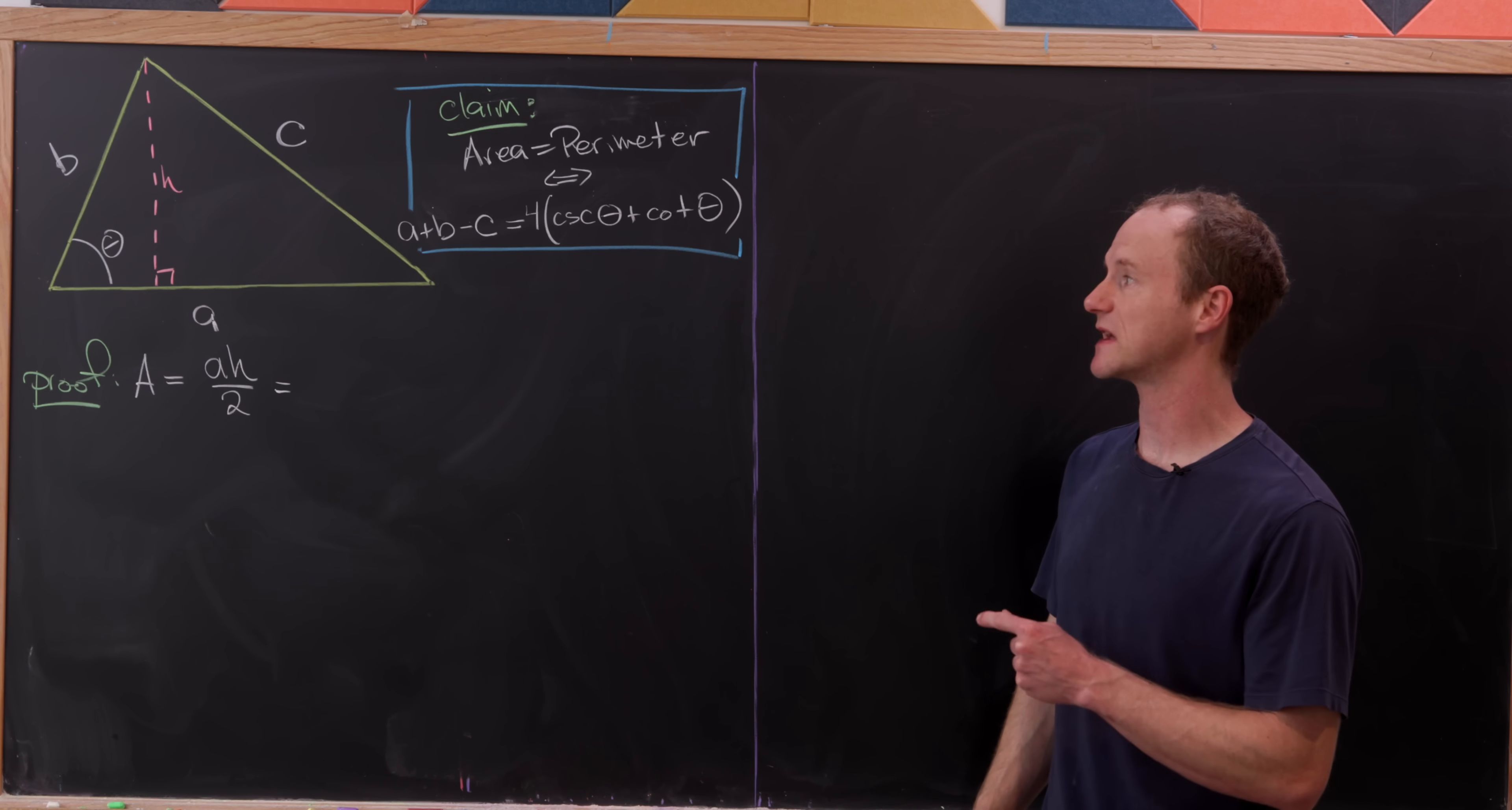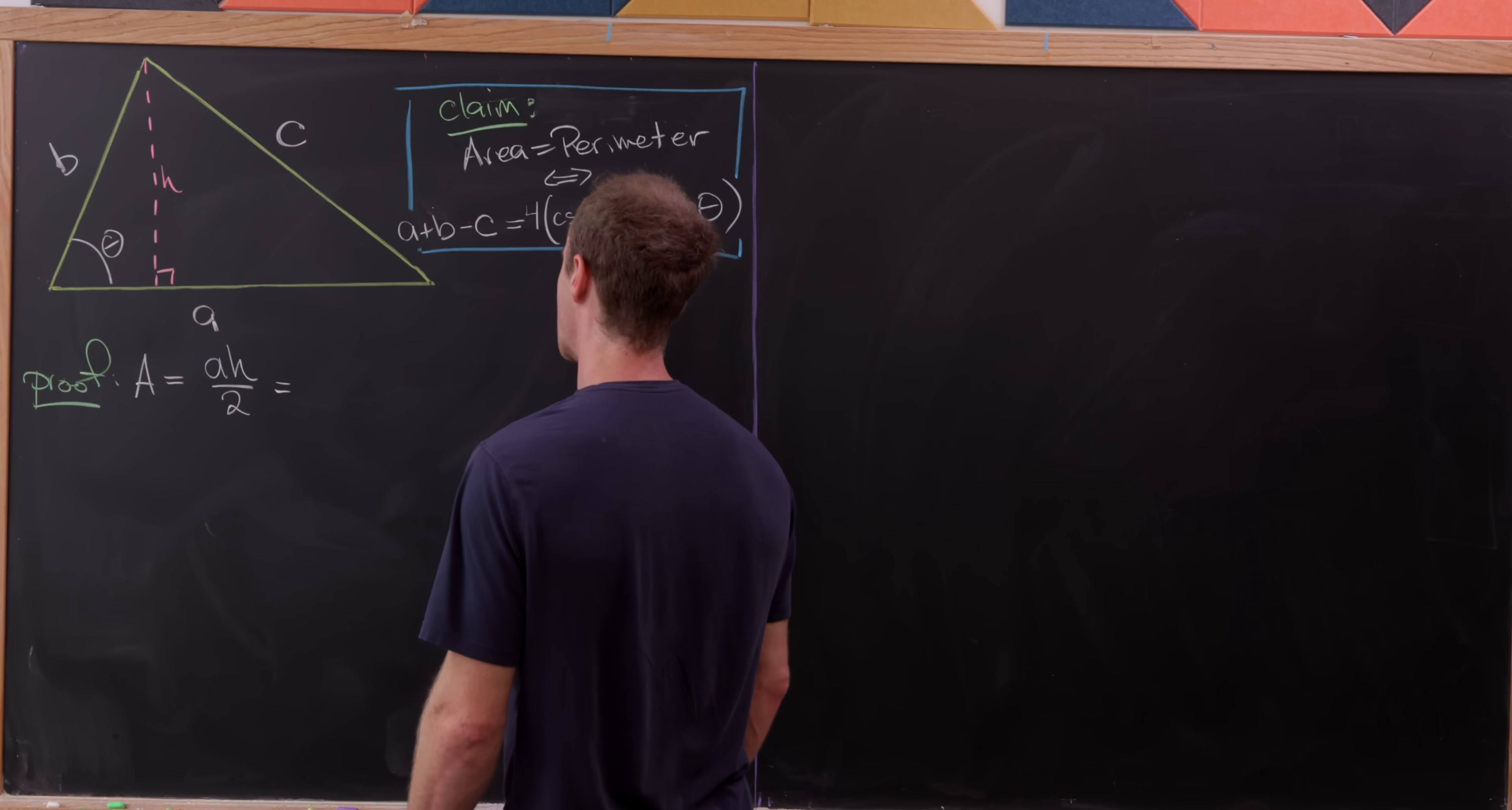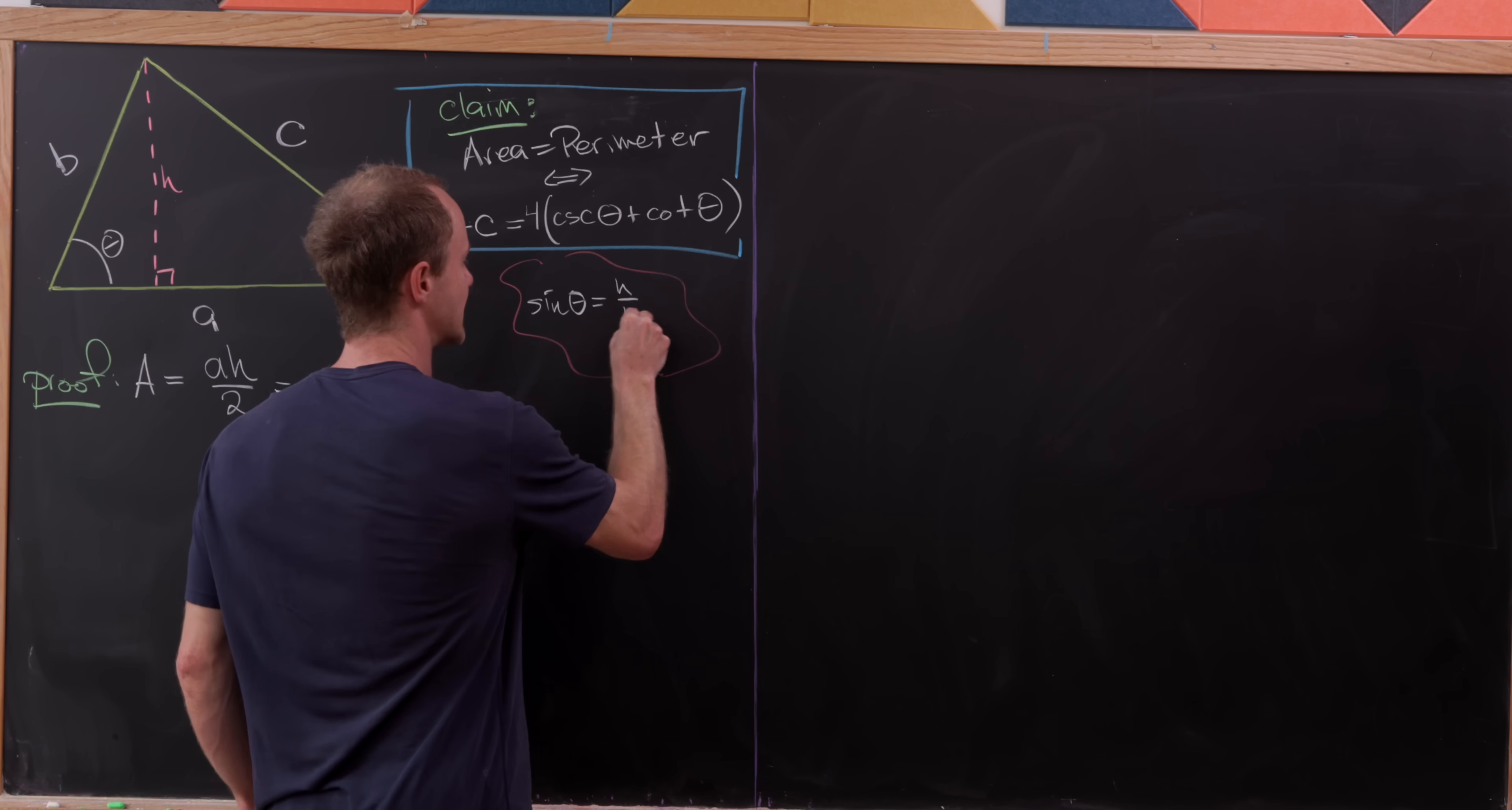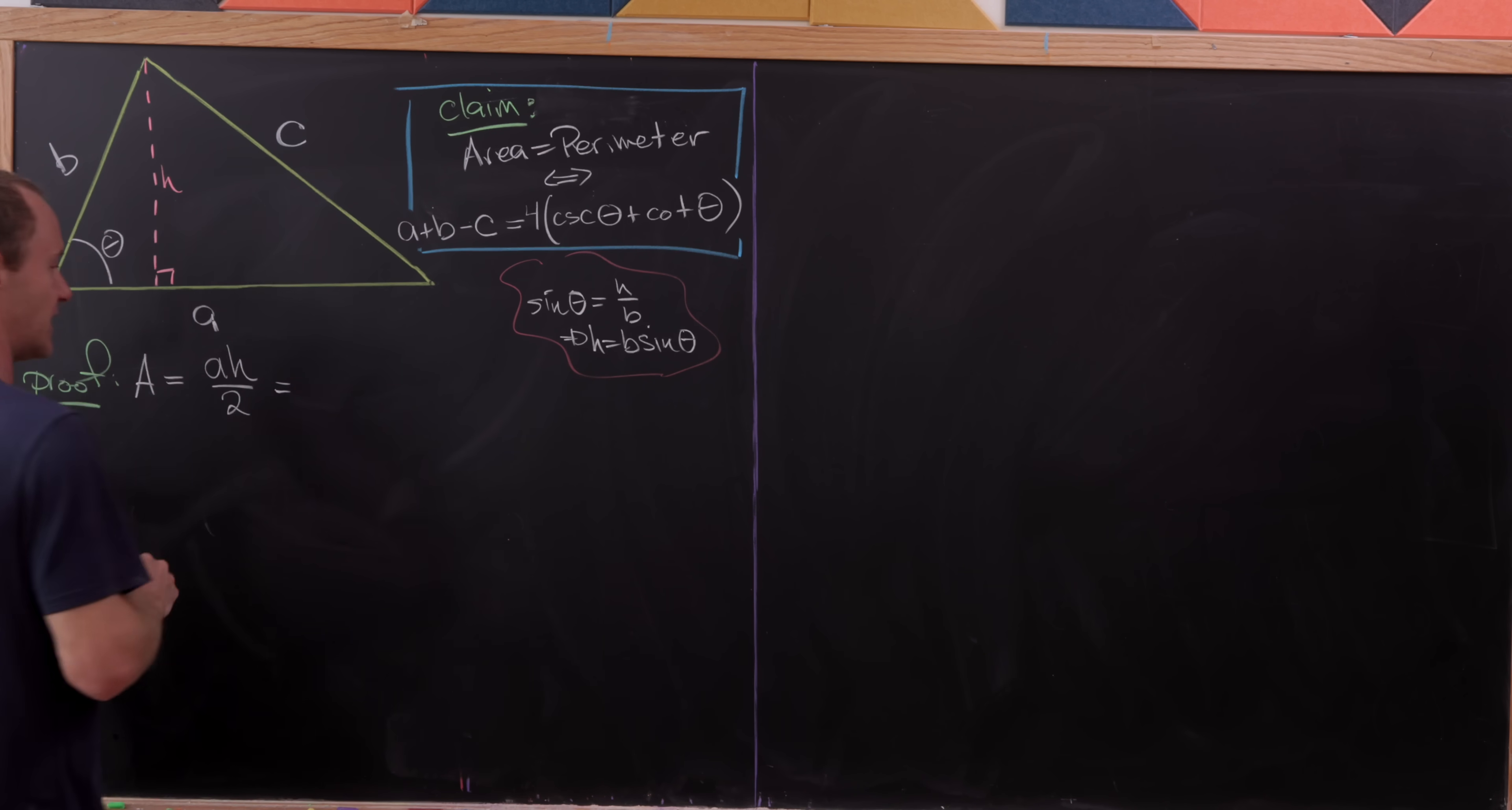Just given the fact that the area of the triangle is base times height over two. But now what we'll do is express h using trigonometry in terms of b and theta. Let's observe that the sine of theta, that's going to be opposite over hypotenuse, is h over b, meaning that h is equal to b times sine theta.